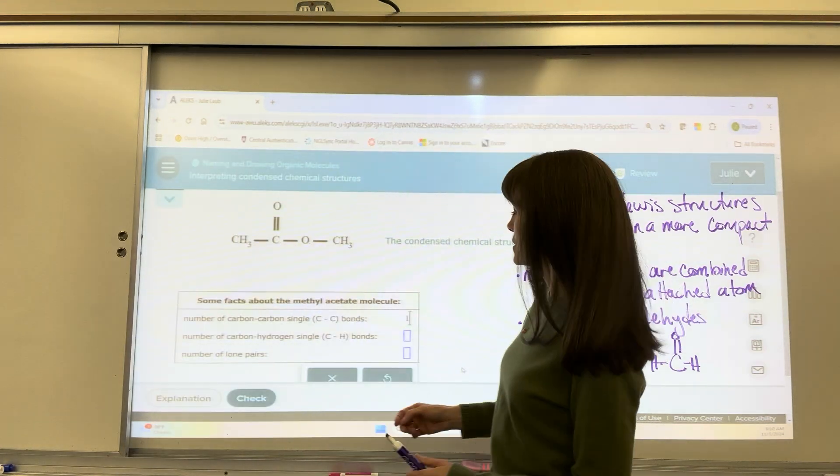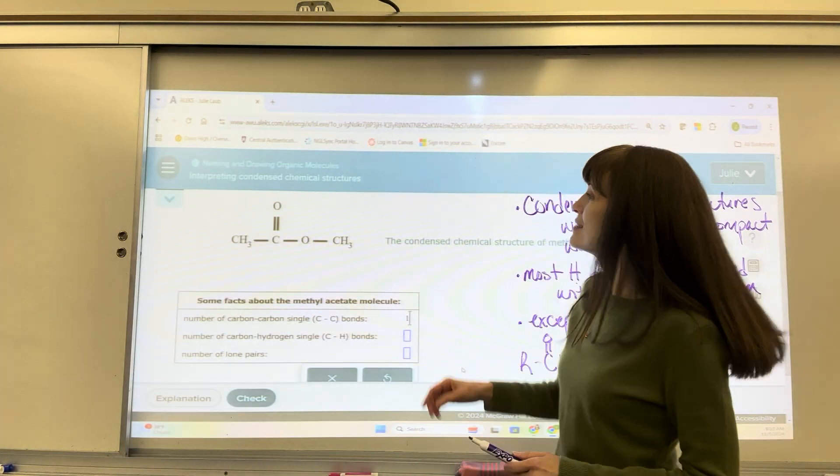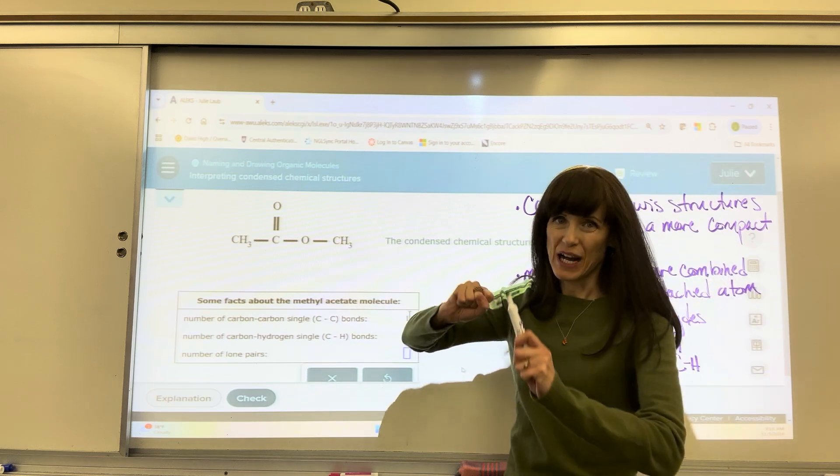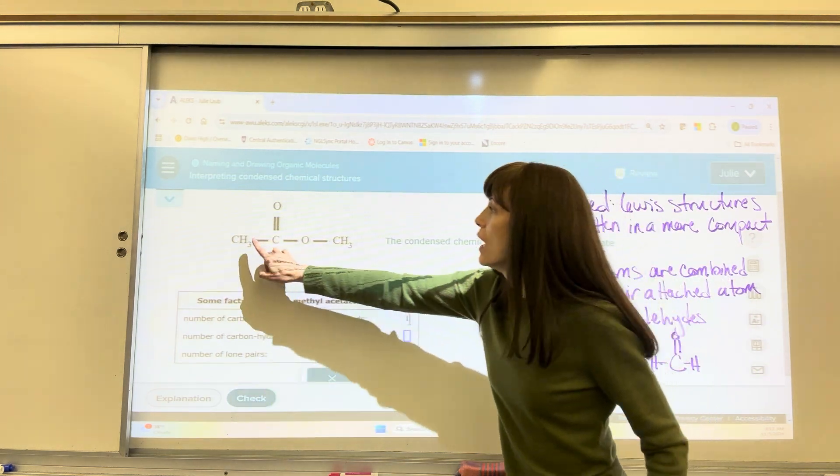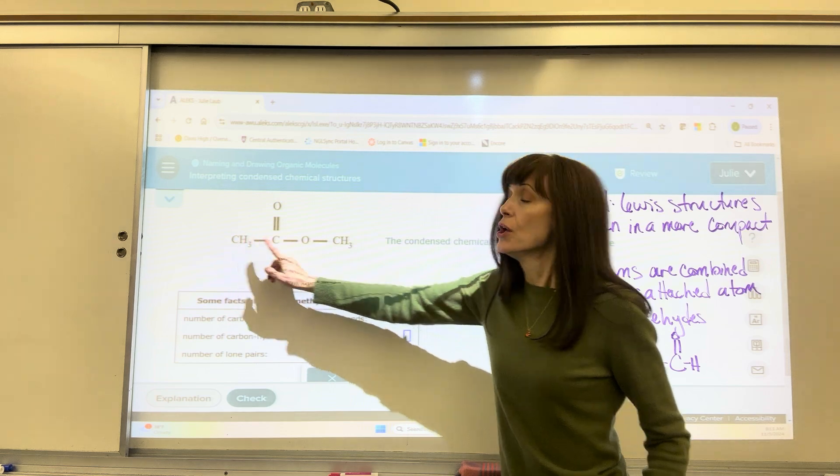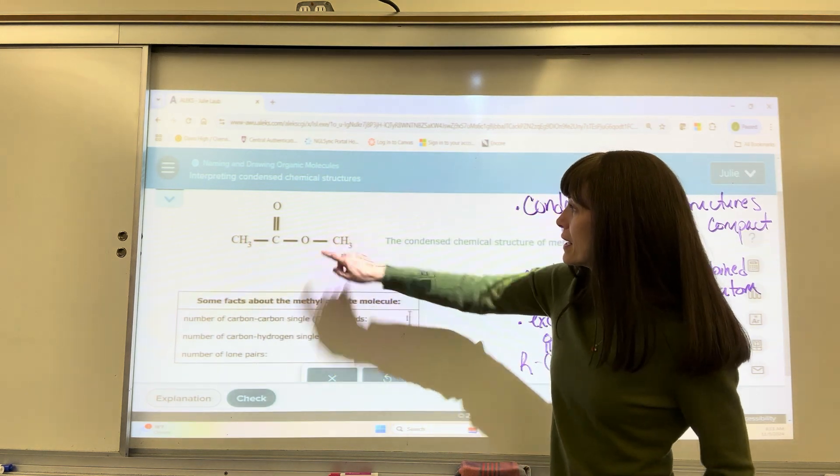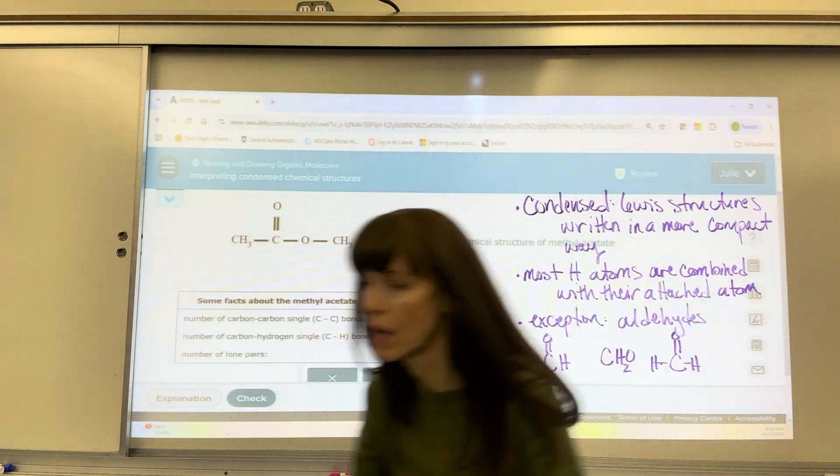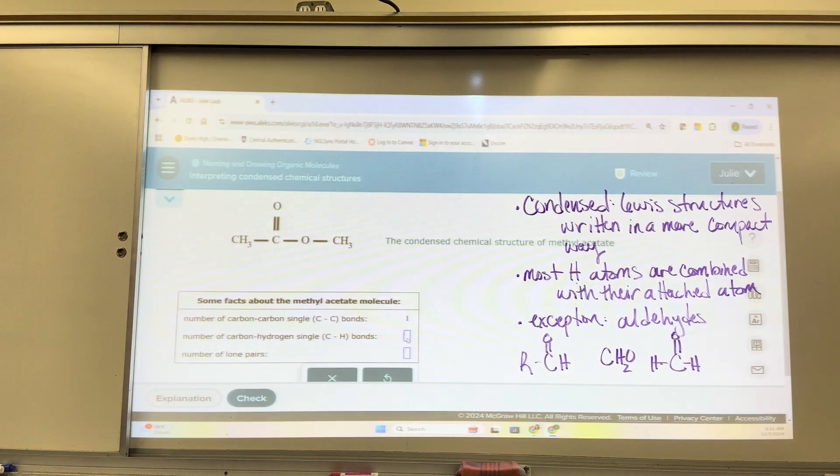Now it wants to know carbon-hydrogen bonds. So my carbon-hydrogen, I'm not going to write it out. Let's count it together. I'm going to have three carbon-hydrogen bonds here, three carbon-hydrogen bonds there, which is going to give me a total of six.